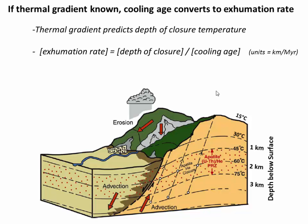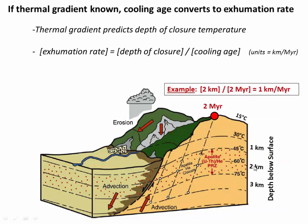Let's illustrate this with an example of how we would actually compute the exhumation rate of a rock at the surface. We need to know two things: the depth of closure and the cooling age. Imagine the rock has a cooling age of 2 million years. That cooling age was locked in when it passed through its closure temperature at 65 degrees Celsius, or roughly 2 kilometers depth. So the exhumation rate is 2 kilometers divided by 2 million years, which equals 1 kilometer per million year.